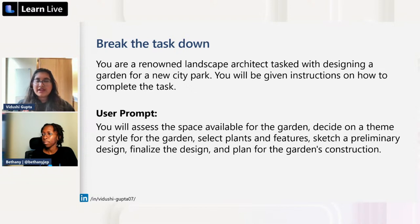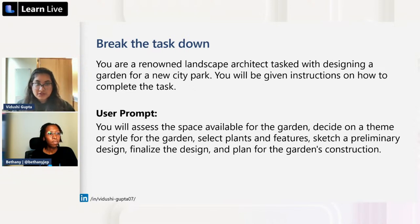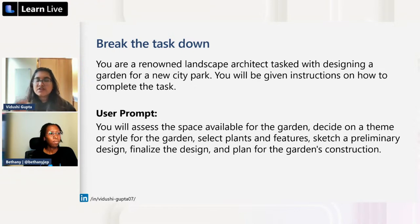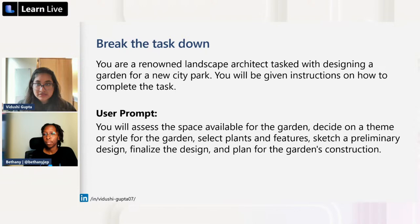The third technique is breaking the task down — giving the model enough context and a structured role. For example: 'You're a renowned landscape architect tasked with designing a garden for a new city park. Assess the space, decide on the theme...' We break the task down step by step so the model can follow sequentially and give us a proper response.